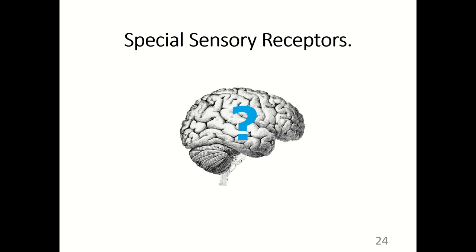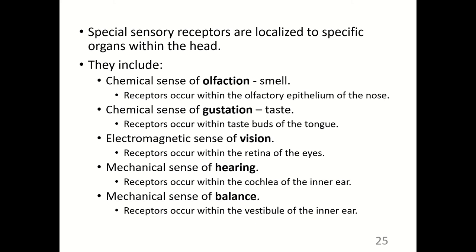Special sensory receptors are localized to specific organs within the head. They include the chemical senses of olfaction (smell) and gustation (taste), the electromagnetic sense of vision, and the mechanical senses of hearing and balance. Receptors for olfaction occur in the olfactory epithelium of the nose; for gustation in taste buds of the tongue; for vision in the retina of the eyes; for hearing in the cochlea of the inner ear; and for equilibrium in the vestibule of the inner ear.